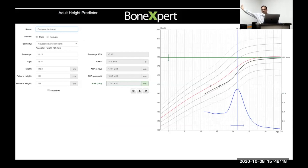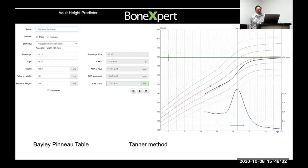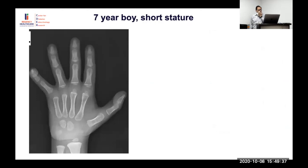The bone age can then predict final height. Methods for height prediction include the Bailey-Pinneau method based on the Greulich-Pyle atlas, the Tanner method, and extrapolation from growth charts. Bone Expert also provides height prediction. Now for case examples: a seven-year-old boy with short stature.